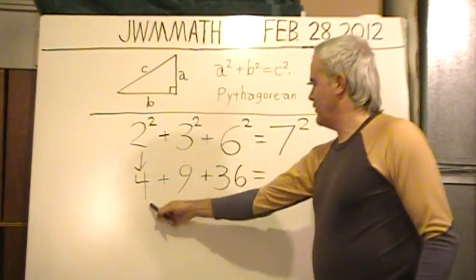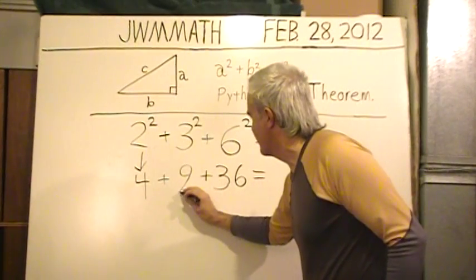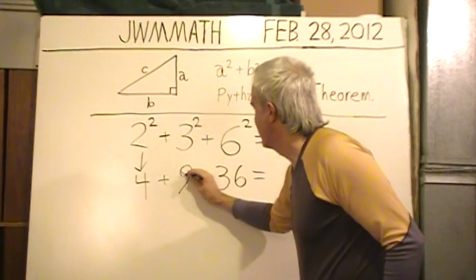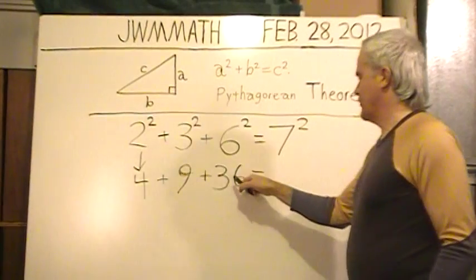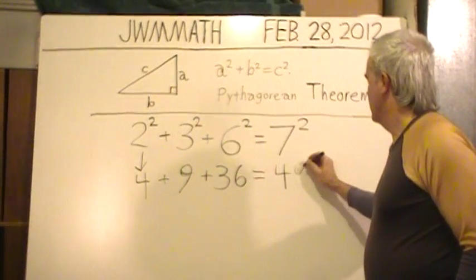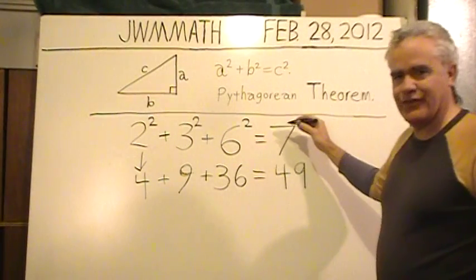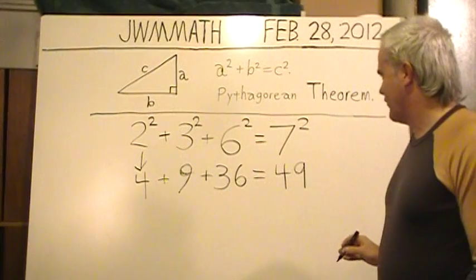I'm going to add these three numbers: four, nine, and 36. I'll see if I can make this nine a little darker. Four plus nine plus 36 is 49. Yeah, it looks good. 49 is indeed seven squared, seven times seven.